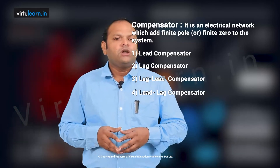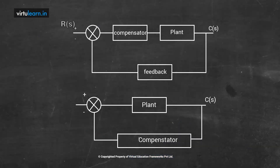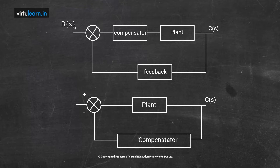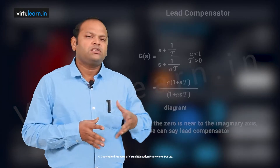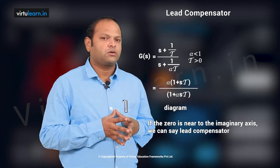There is another classification of controllers based on the placement of the compensator. If the compensator is placed in series with the plant, it is called series compensation. If we use the compensator in a feedback path, it is called feedback compensation.